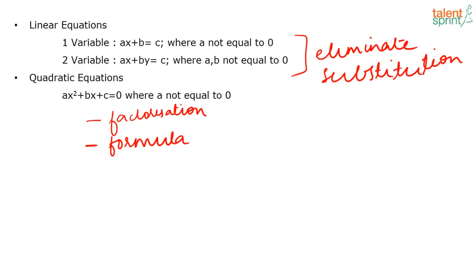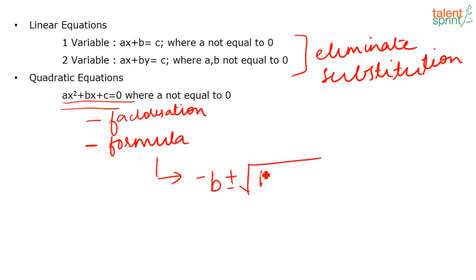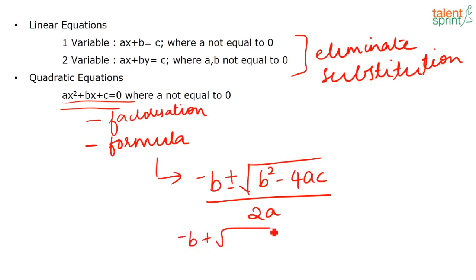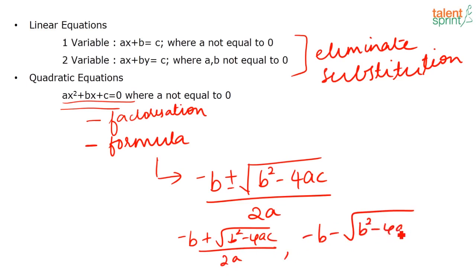All the details are available in the video lessons for you, so I am just briefing you on the methods. The formula to find the roots of AX² + BX + C = 0 is: x = (−B ± √(B² − 4AC)) / 2A. The two roots are (−B + √(B² − 4AC)) / 2A and (−B − √(B² − 4AC)) / 2A, generally called alpha and beta respectively.